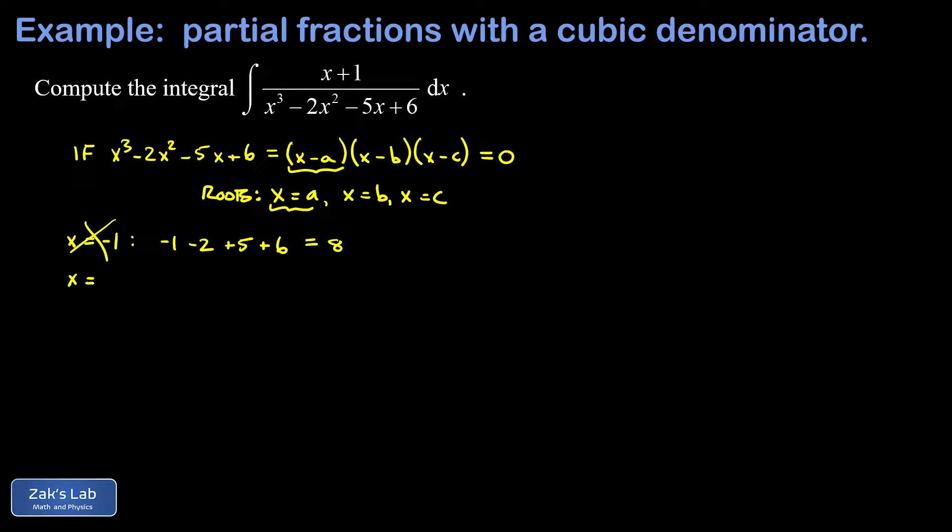So we move on to the next natural guess, which is plus one. Plugging that in, I get one for the first term minus two minus five plus six. One minus two, that's negative one minus five is negative six plus six. It gives me zero. So we just found a root of this cubic polynomial, x equals one. And that means x minus one is a factor.